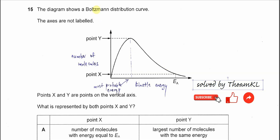Question 15. The diagram shows a Boltzmann distribution curve. The axes are not labeled.